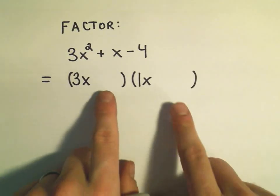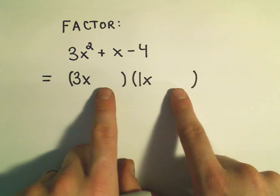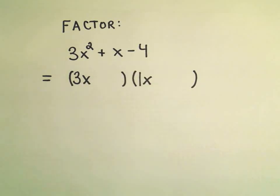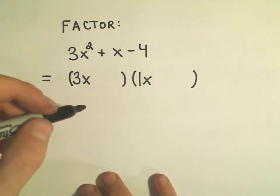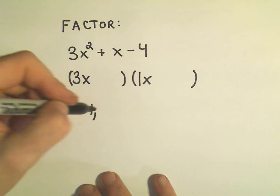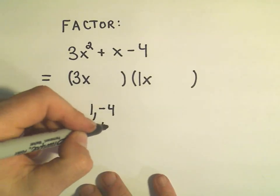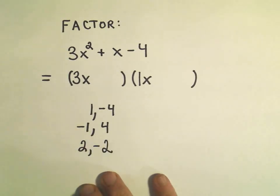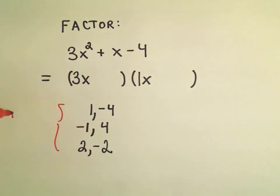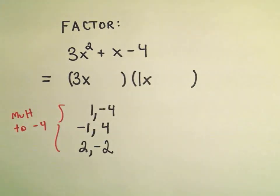Now, the numbers we put, the second numbers we put in each set of parentheses, those have to multiply together to give us our negative 4. So, already to me, this is where it gets a little tricky because we're thinking, what numbers multiply to negative 4? Well, there's positive 1 and negative 4. Likewise, negative 1 and positive 4 would work. Also, we could use 2 and negative 2. Those would multiply to give me, again, I'm looking for numbers that multiply to negative 4, whatever the constant is.